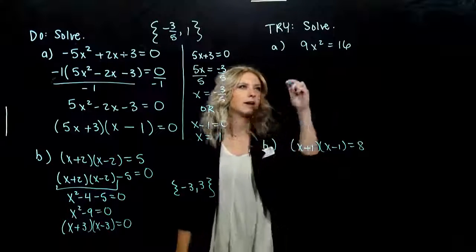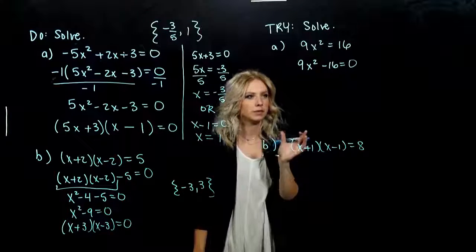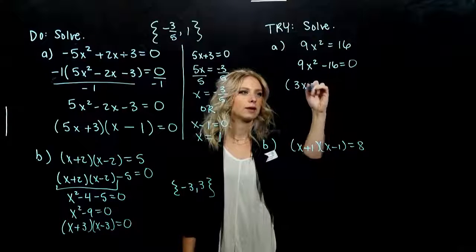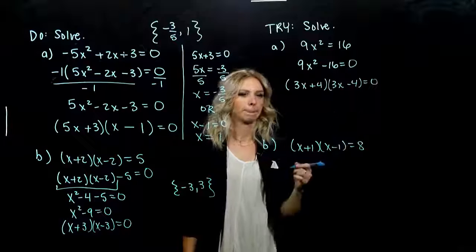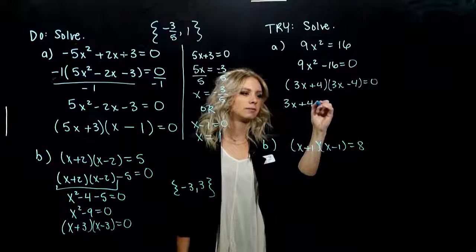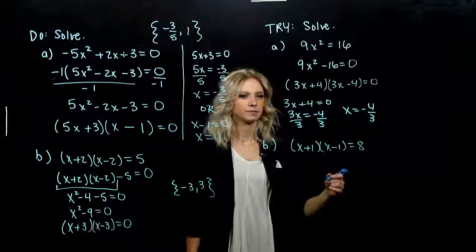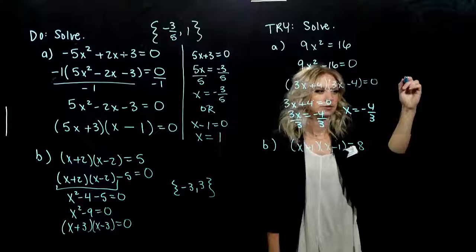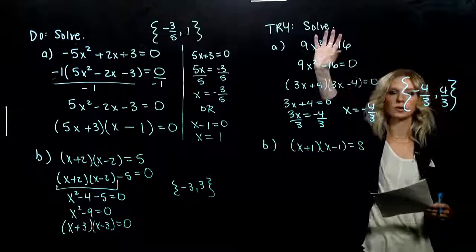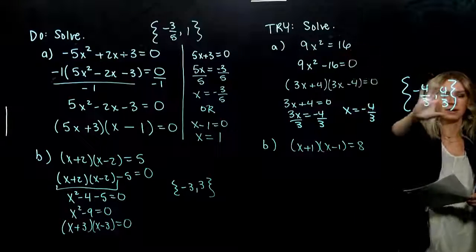For Part A, we need everything on one side equal to 0, so we subtract 16. We don't have any products to deal with, so we look at how to factor. We've got a binomial and a difference — so it's a difference of squares: 3x plus 4 times 3x minus 4 equals 0. Setting the first chunk equal to 0 gives 3x equals negative 4, so x equals negative 4 thirds. The second chunk differs only by sign, so x equals positive 4 thirds. Check by plugging back into the original equation.